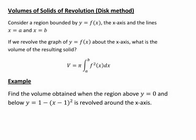In this recording, we look at a first example of finding a volume of a solid of revolution using the disk method, where we consider a region bounded by a function y = f(x), the x-axis, and the lines x = a and x = b. If we revolve the graph of y = f(x) about the x-axis, the volume of the resulting solid can be worked out as π times the integral from a to b of f(x) squared dx.